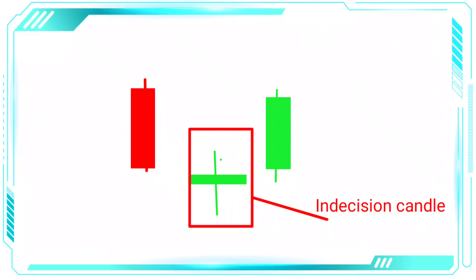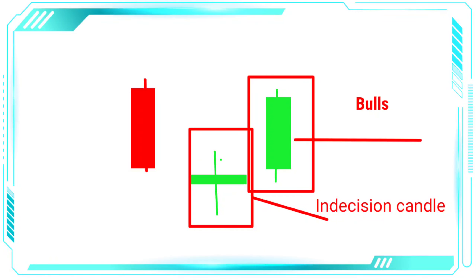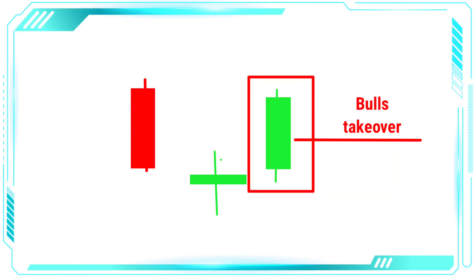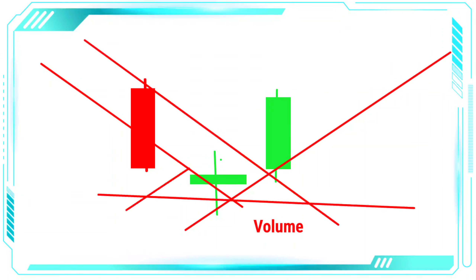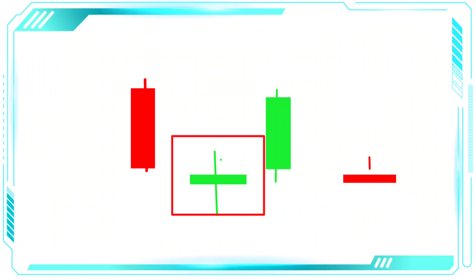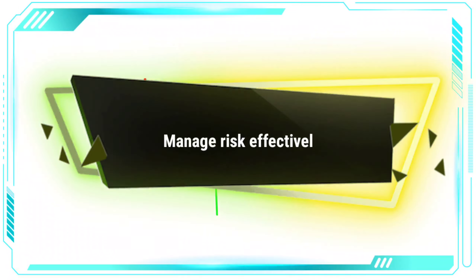The smaller candle in the middle represents a period of indecision in the market, but once the bulls take over, they push the price up significantly. Traders can use the morning star pattern to identify potential buying opportunities and can also use other indicators such as volume and trend lines to confirm the reversal. However, it's important to note that not all morning star patterns are created equal. It's essential to look for additional confirmation before entering a trade and to manage your risk effectively.